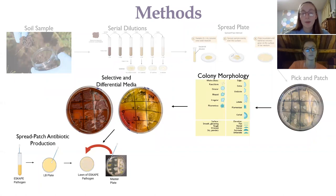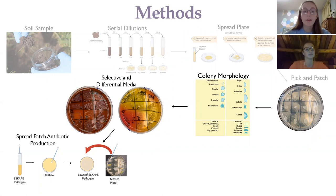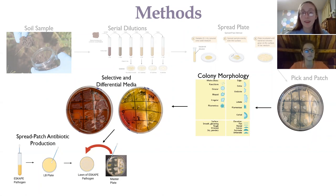First, we looked at the colony morphology of each of the isolates. Then we completed selective and differential media. Finally, we did the spread patch antibiotic production where we looked for antibiotic production of these isolates to see if any were antibiotic producers.